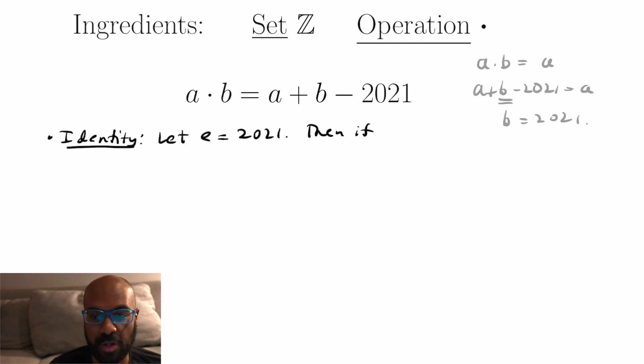Then if a is one of these integers we have to apply the group operation with a and e on either side. So a dot e is a plus 2021 minus 2021 which is a. Okay that's great. And then similarly e dot a is 2021 plus the quantity a minus the 2021 which gives us a back as well. So e does act as the identity. It's a funny identity but it works for this particular operation and it gives us a feel what it's like to go through the processes of trying to figure these things out for a general group.